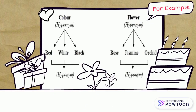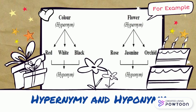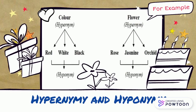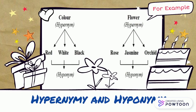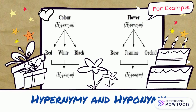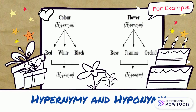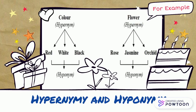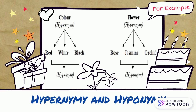For example one: color is the hypernym, and red, white, and black are hyponyms. For example two: flower is the hypernym, and rose, jasmine, and orchid are hyponyms.